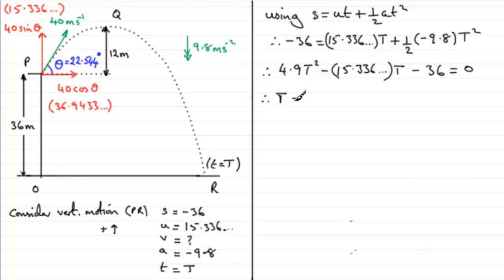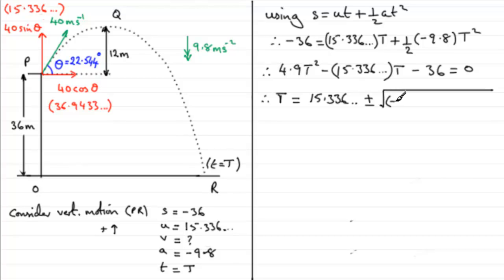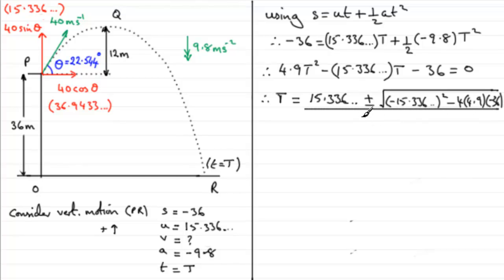The quadratic formula is T = (−B ± √(B² − 4AC)) / 2A, where A = 4.9, B = −15.336, and C = −36. So T equals minus(minus 15.336) plus or minus the square root of (minus 15.336)² minus 4 times 4.9 times (minus 36), all divided by 2 times 4.9.